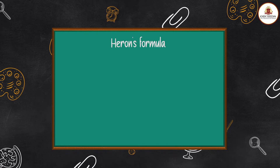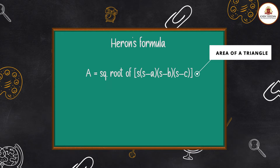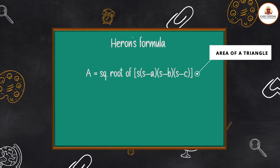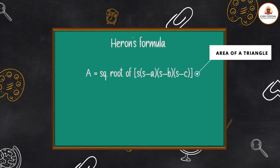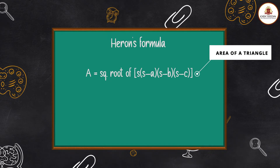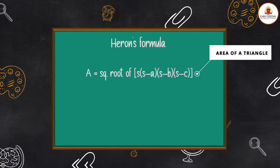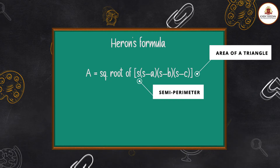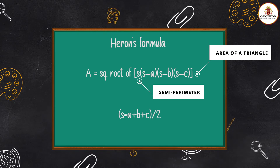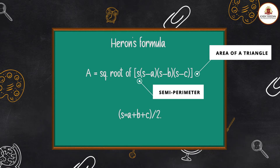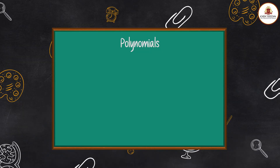Heron's Formula: The second most significant formula for a triangle is Heron's formula — another way to find the area of a triangle. A = √[s(s − a)(s − b)(s − c)], where s is the semi-perimeter: s = (a + b + c) ÷ 2.